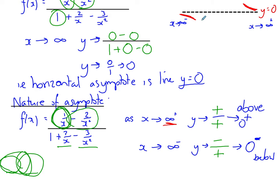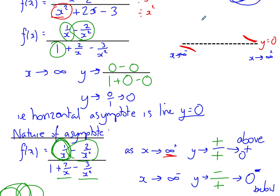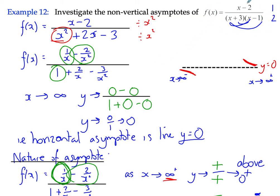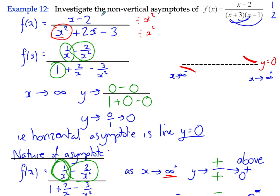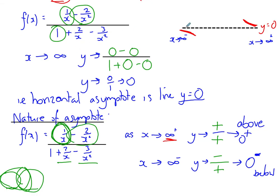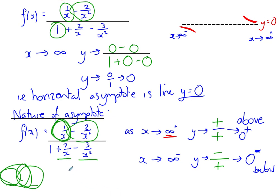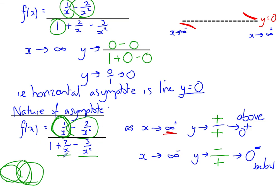So what we've done here is investigated the nature of a rational function where the order of the denominator is greater than the order of the numerator. We worked out that the asymptote was going to be horizontal with an equation y equals 0, and then we were able to study where the graph or curve was going to tend towards - either above or below the asymptote. There's a slightly easier technique for when the order is the same or higher on the numerator, and we'll look at that in examples 13 and 14. Thank you.